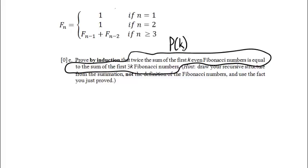The hint says to draw the recursive structure from the summation — that sum of the first k even Fibonacci numbers — not from the definition of Fibonacci numbers, and to use the fact we just proved: every third Fibonacci number is even, specifically F_n is even when n is divisible by 3. That's why the sum of the first k even Fibonacci numbers and the first 3k Fibonacci numbers both end with F_{3k}.